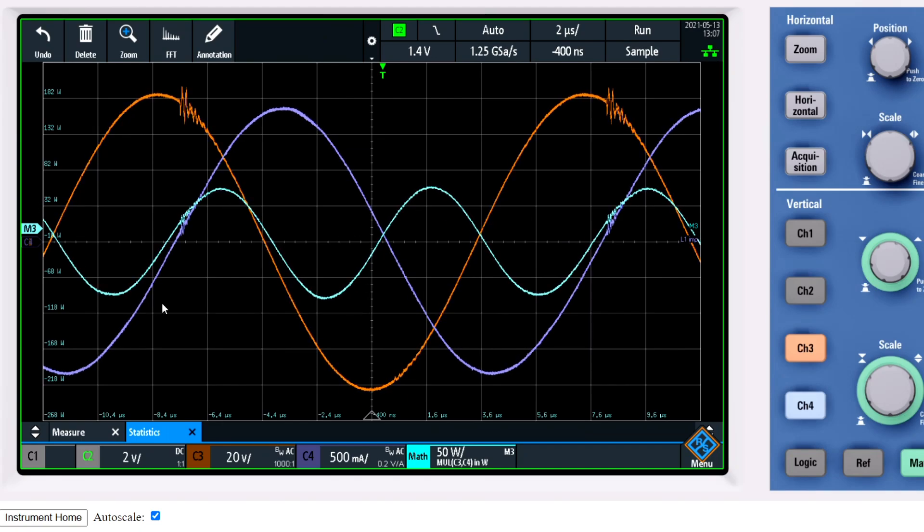As you can see here is the power trace in light blue. The frequency of the power is twice as high as the resonant frequency. And as you can see we have a negative power cycle where the power is being generated, a positive cycle where the power is consumed, a negative cycle, a positive cycle and so on.